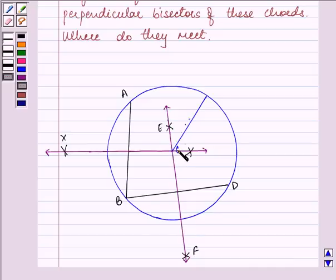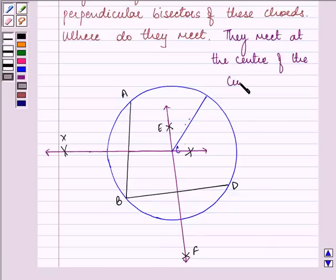They all intersect at point C. So where do they meet? They meet at the center of the circle, that is point C. This completes the session. Hope you understood the concept well and enjoyed it too. Have a very nice day ahead.